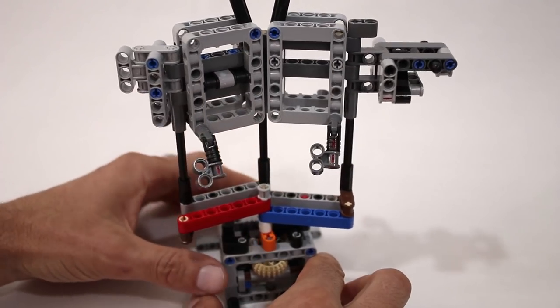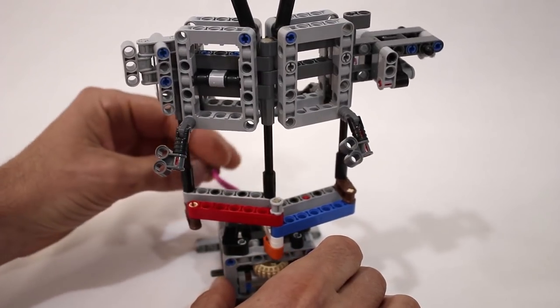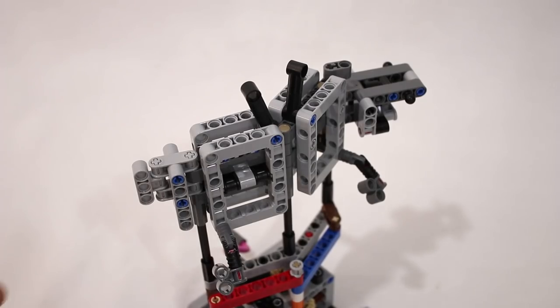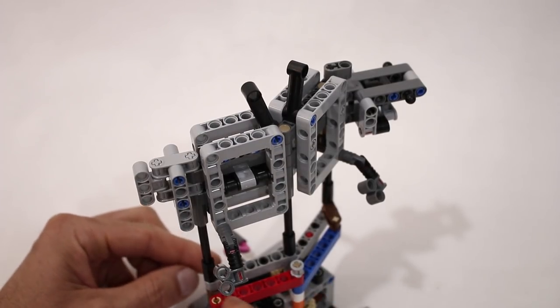So as we rotate the crank, they influence the lever and move the head and the tail. Now one thing to note is that because the head and the tail are both driven by the same crank and they have the same geometry, they always maintain the same orientation throughout their motion.